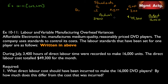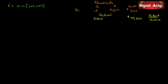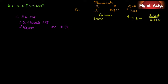Requirement 1: What direct labor cost should have been incurred to make the 16,000 DVD players? When we talk about how much should have been incurred, we're talking about standard quantity times standard price. So: 0.2 hours × 16,000 units × $15 per hour = $48,000. We could also just take the $3 standard cost per unit times 16,000 — I'm just showing the long way.